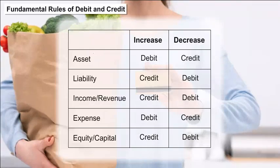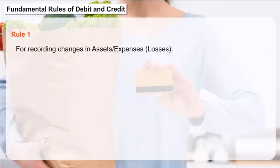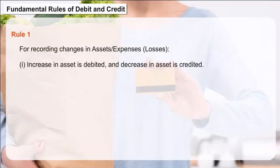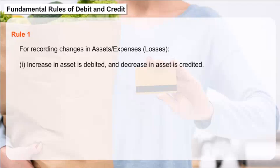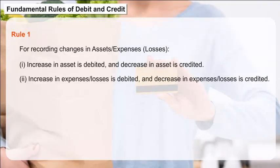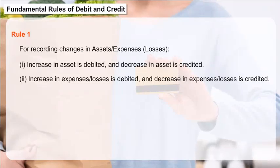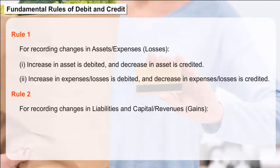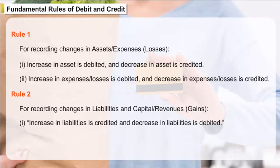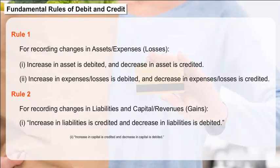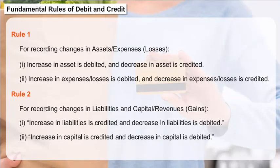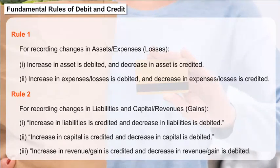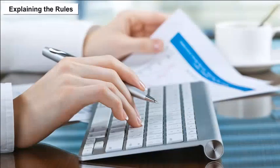The two fundamental rules for recording changes in accounts are: Rule 1 — For assets or expenses/losses: (1) increase in asset is debited and decrease in asset is credited; (2) increase in expenses or losses is debited and decrease is credited. Rule 2 — For liabilities, capital, or revenues/gains: (1) increase in liabilities is credited and decrease is debited; (2) increase in capital is credited and decrease is debited; (3) increase in revenue or gain is credited and decrease is debited.